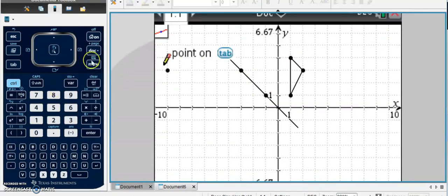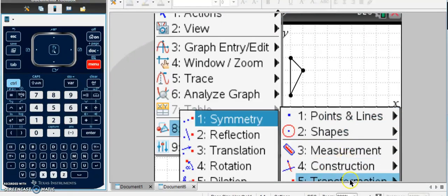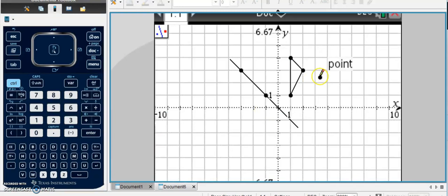So if I knew that those were the points, then I could just reflect it over that line by clicking on the triangle and clicking on the line Y equals negative X, and I have my reflection.